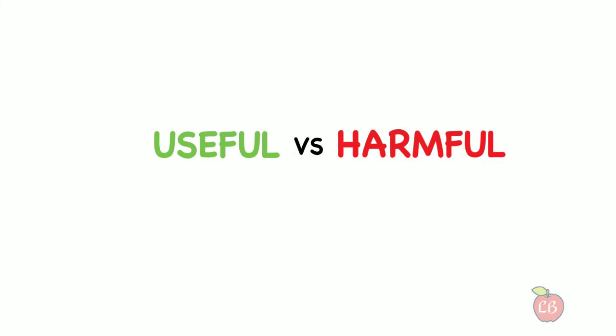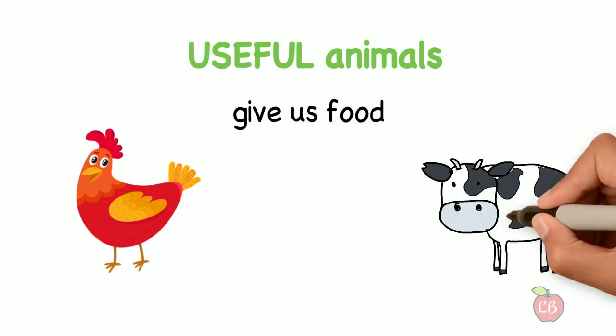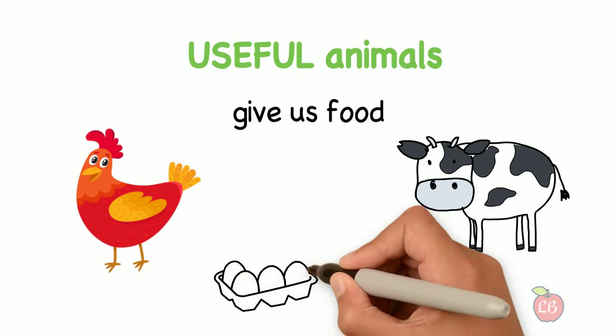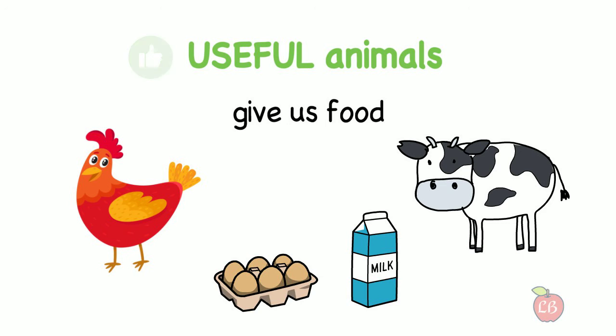Now talking about other characteristics about animals in general, we can say they can be useful or harmful. Useful animals are those who give us food. For example, the hen and the cow are useful animals because they provide us eggs and milk. And that is good.